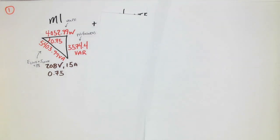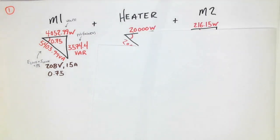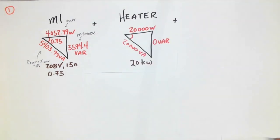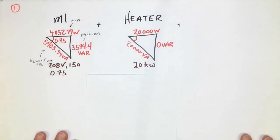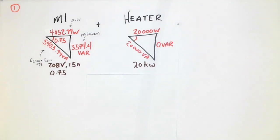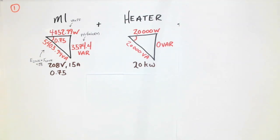The next one is the heater. The heater is total power — there are no VARs in the heater. Because of that, there is no vertical component to that triangle. I prefer to put the vertical in there and just label it zero, because it makes me feel good to do so.